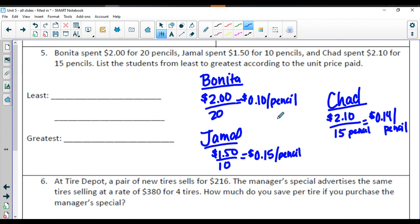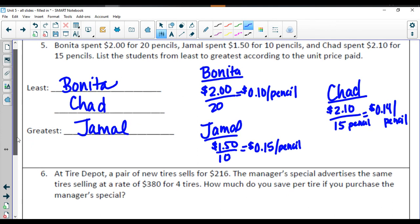So we want to order these from least to greatest. It looks like Benita has the cheapest, followed by Chad, and Jamal got ripped off and paid the most. He must have had some fancy pencils.